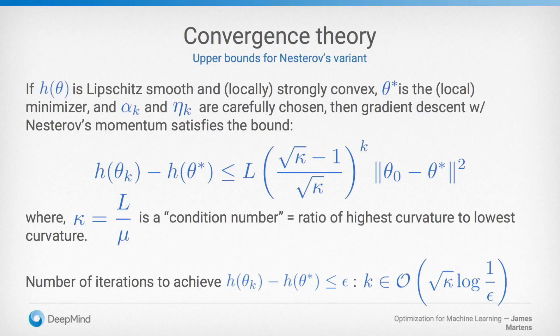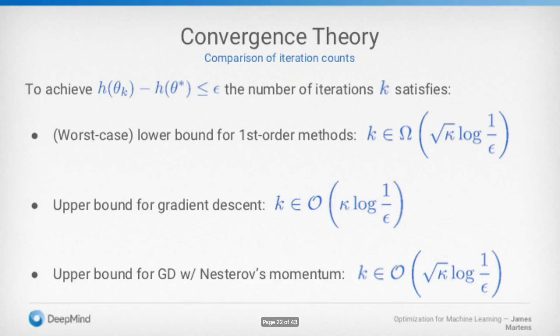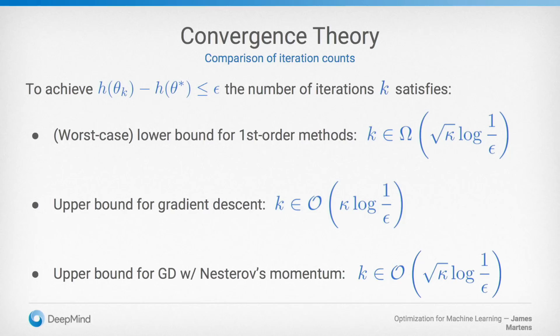To summarize: the worst-case lower bound for first-order methods involves sqrt(kappa), gradient descent gets kappa as an upper bound, and Nesterov's momentum matches the lower bound. But these are worst-case constructions — you shouldn't conclude Nesterov's momentum is always the best thing to use. There could exist examples with special structure where some hypothetical method does better. Indeed, conjugate gradient on a finite-dimensional quadratic will actually converge in a finite number of steps, and if you have clustered eigenvalues — say three clusters — you roughly converge in three iterations, which Nesterov's method wouldn't achieve.